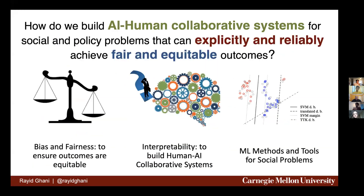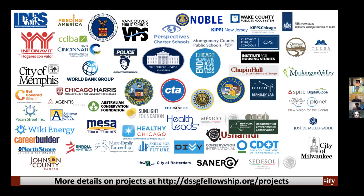So there are three concrete research areas: one is bias and fairness, where we developed methods that don't require trading off accuracy for fairness; second is interpretability work, looking at existing methods to see how they can improve system performance; and third is focusing on specific ML methods useful for societal problems, such as experimental design methods and precision top-k metrics that come up more in public policy problems.